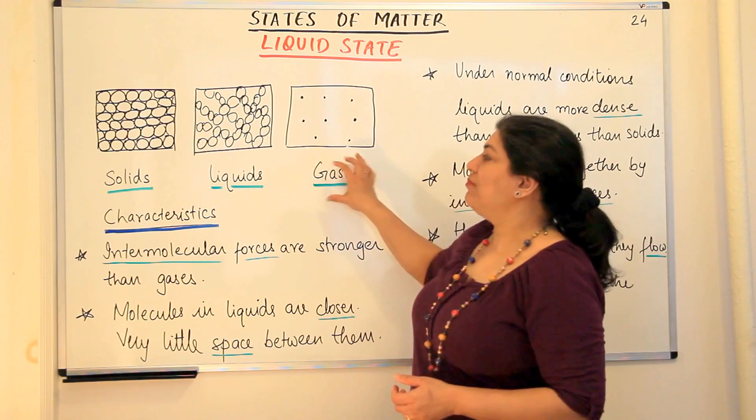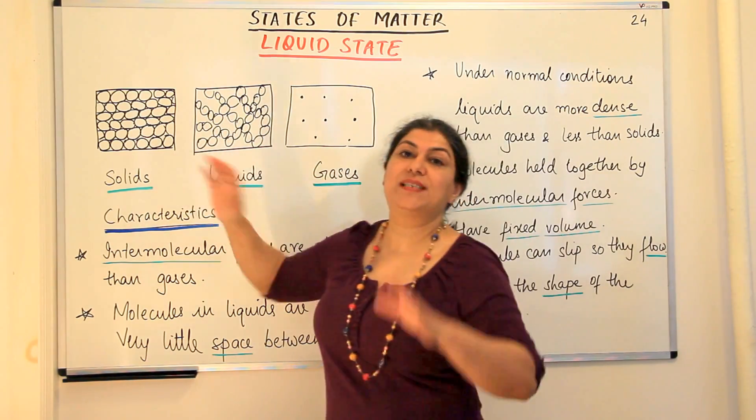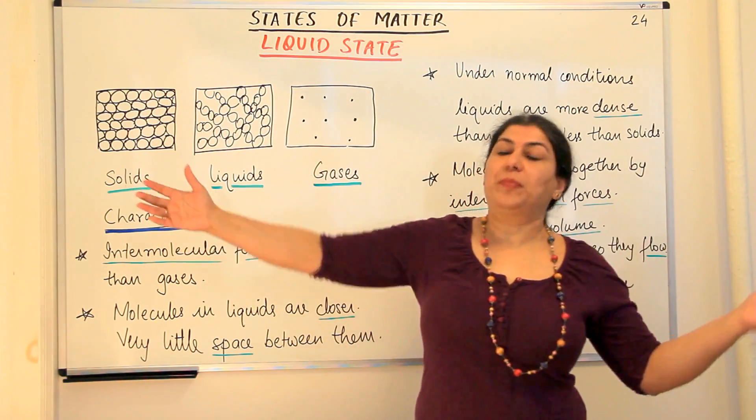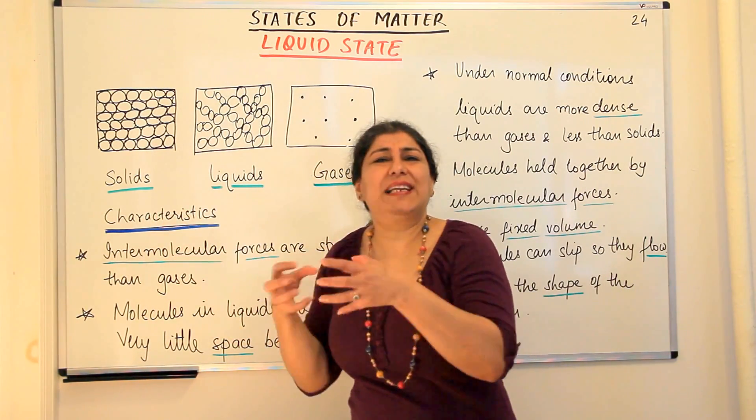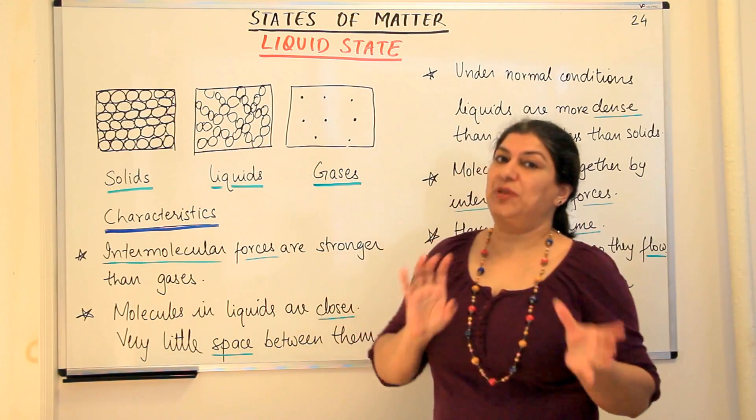The liquid state comes between the solid and the gases. The gaseous and the solid states are extremes. In gases the molecules are far apart and in solids they are tightly packed together, while in liquids it's an intermediate between the two.